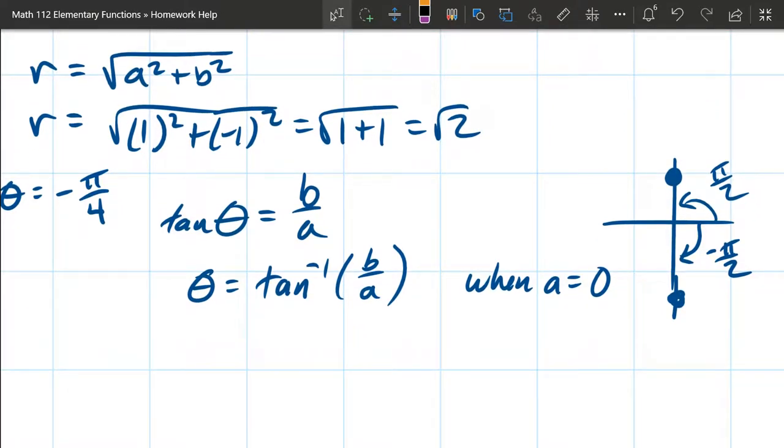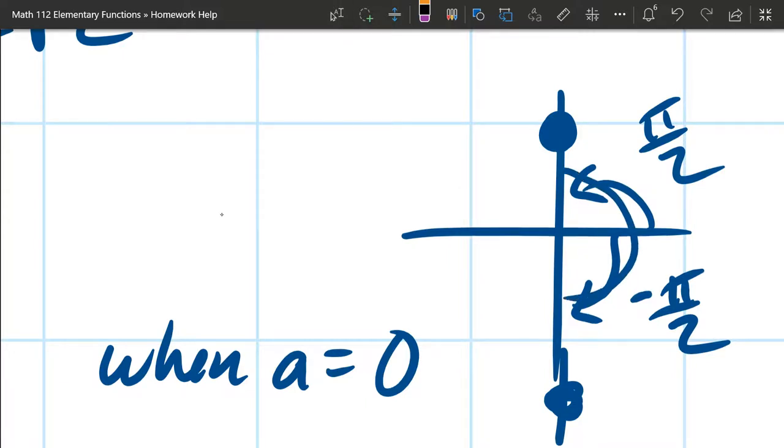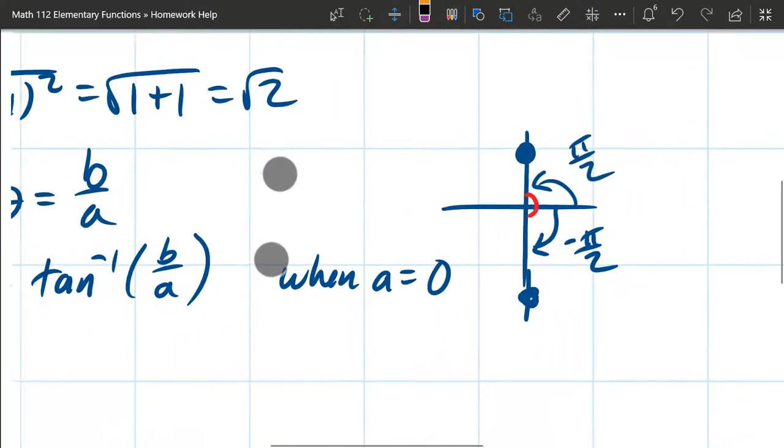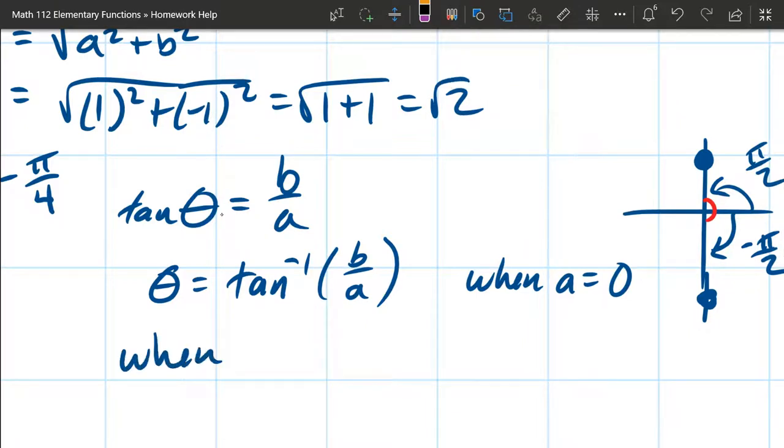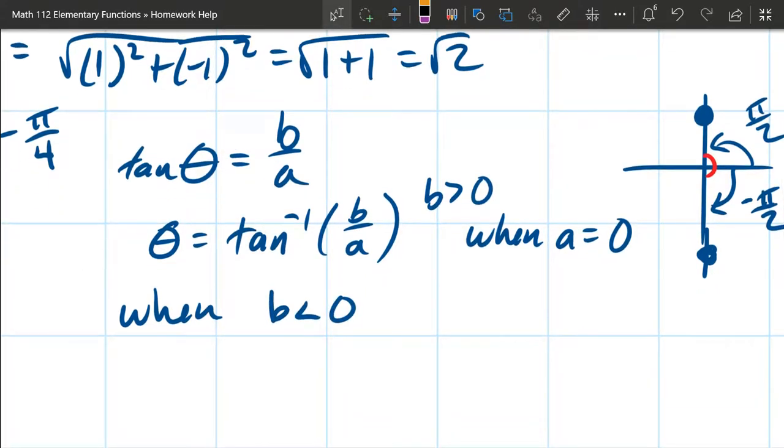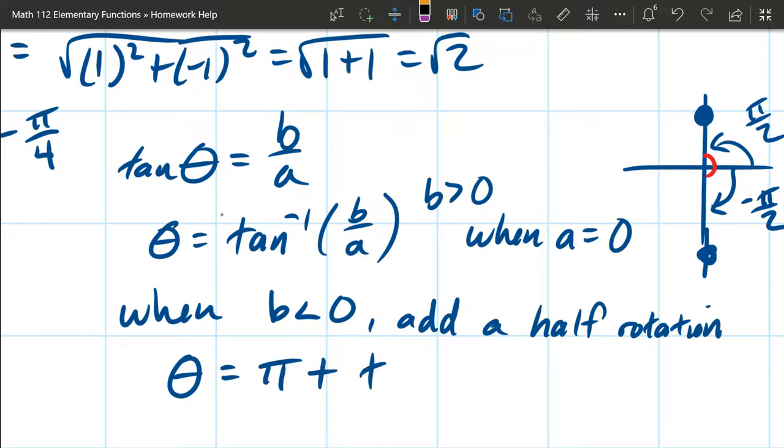There's going to be another thing that's tricky. Tangent inverse only gives you angles between the two angles I listed. It only gives you angles over here. So what are we going to do when our point is on the left side? So what does it mean to be on the left side? Your x coordinate is negative, which corresponds to the letter a. So this one right here works as long as a is not 0 and as long as b is positive. When b is less than 0, what you're going to have to do is add a half rotation. Which means that theta is going to be pi plus, that's our half rotation, plus tan inverse b over a.